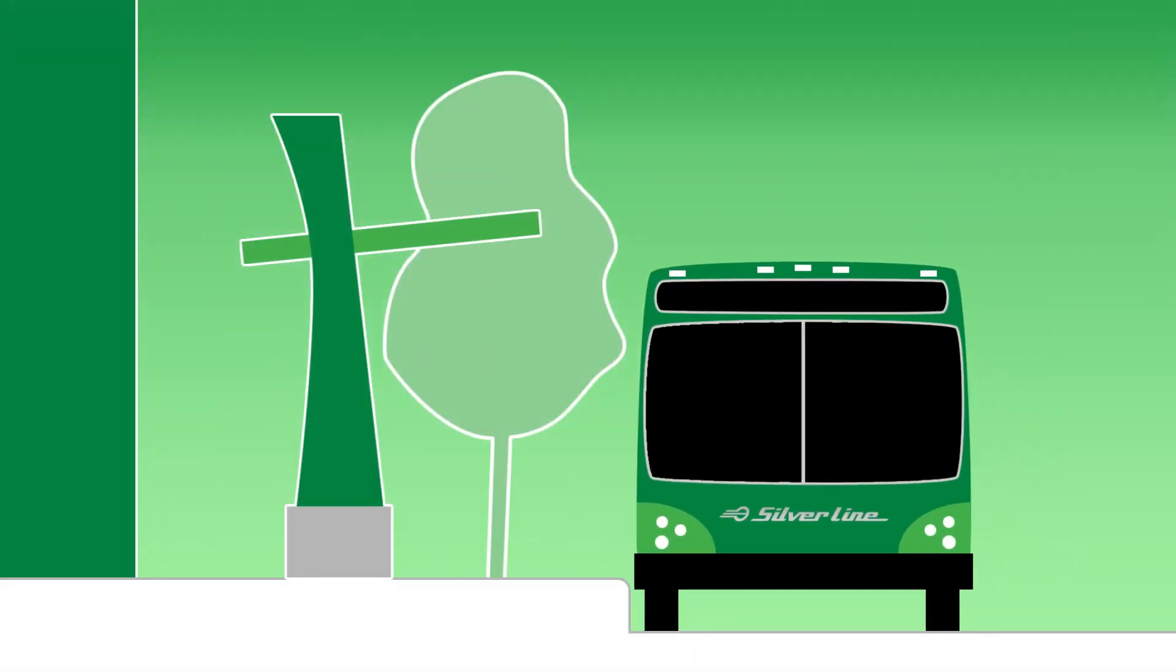Stations will be on the right side of the road, and the Silver Line bus will stop at a level boarding pad only as long as it takes to load and unload passengers.